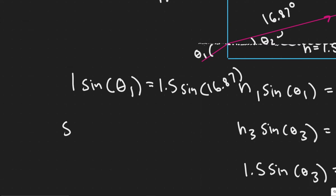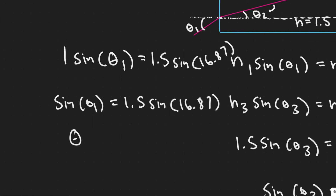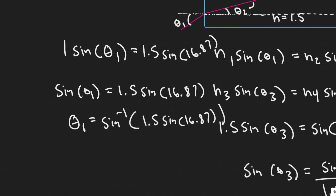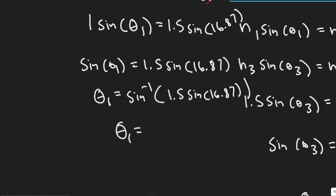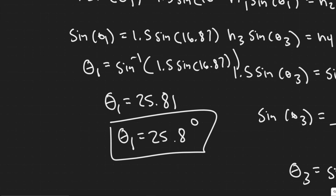So sine of theta 1 equals 1.5 times sine of 16.87 degrees. Taking the arc sine of both sides to solve for theta 1, and plugging into the calculator: 1.5 times the sine of 16.87 degrees, then arc sine of that value, gives a final answer of theta 1 equals 25.81 degrees — rounding to the tenths place, 25.8 degrees.